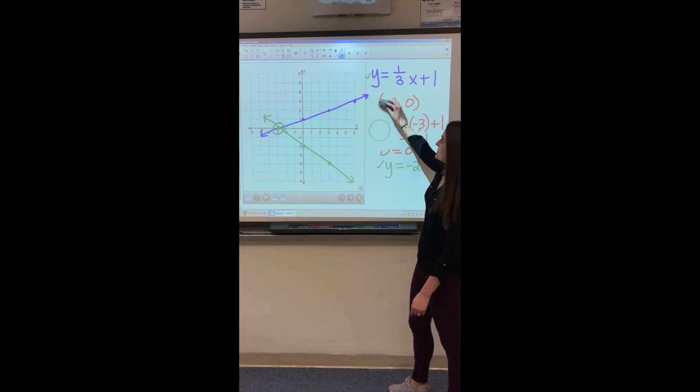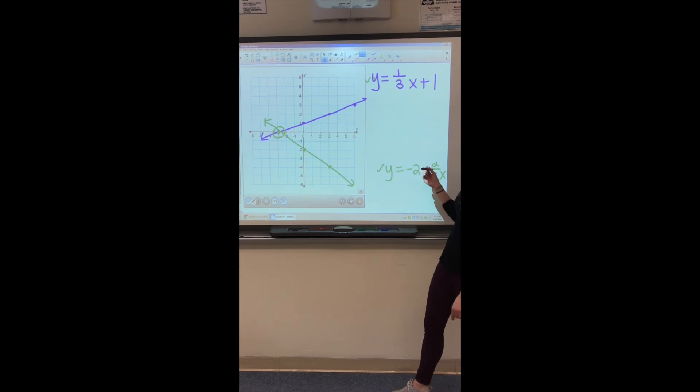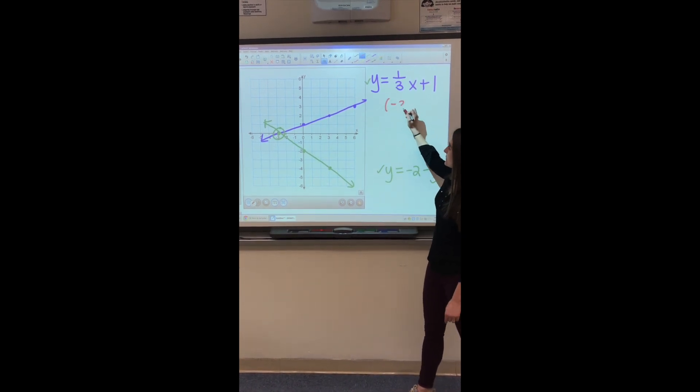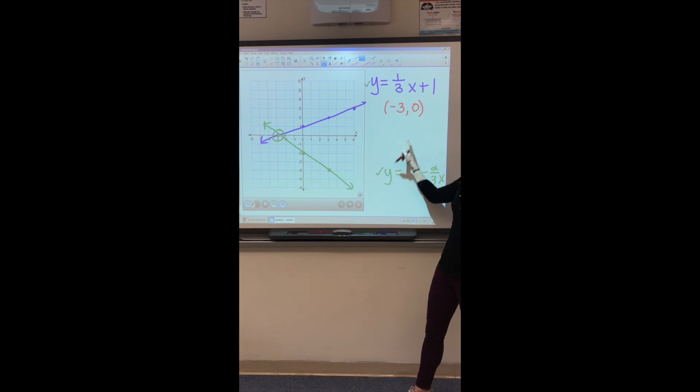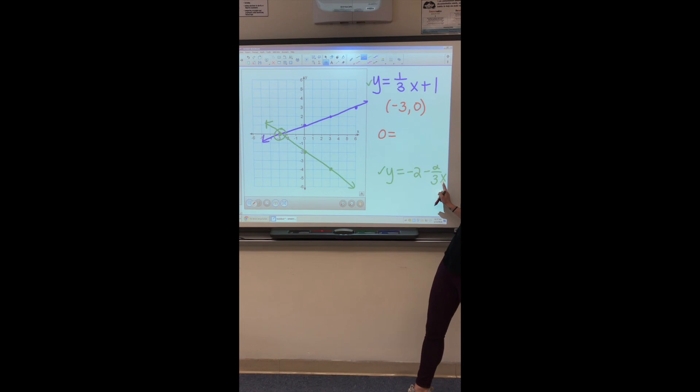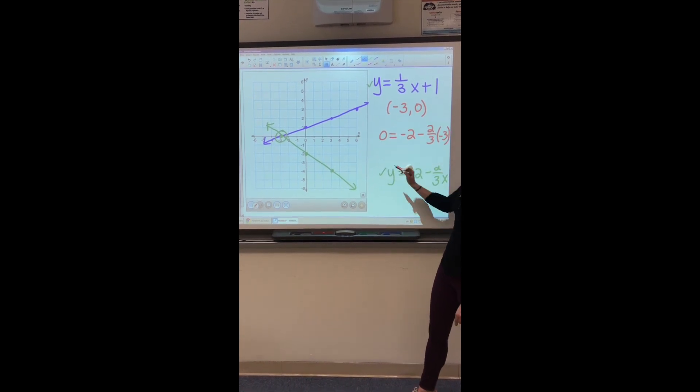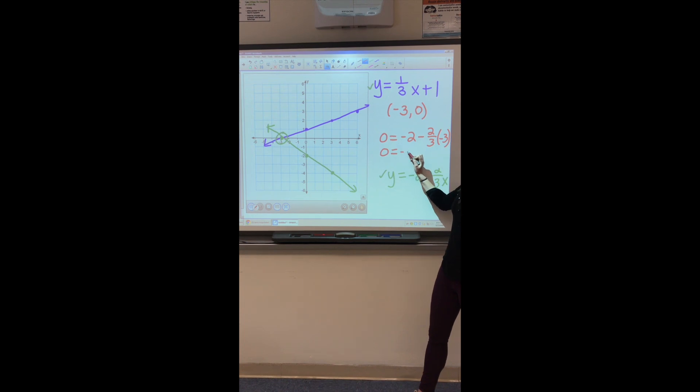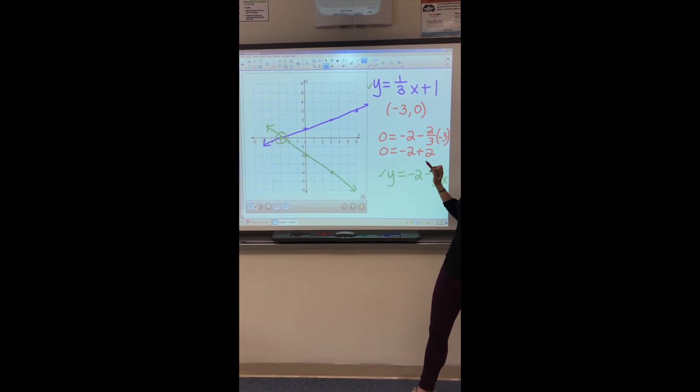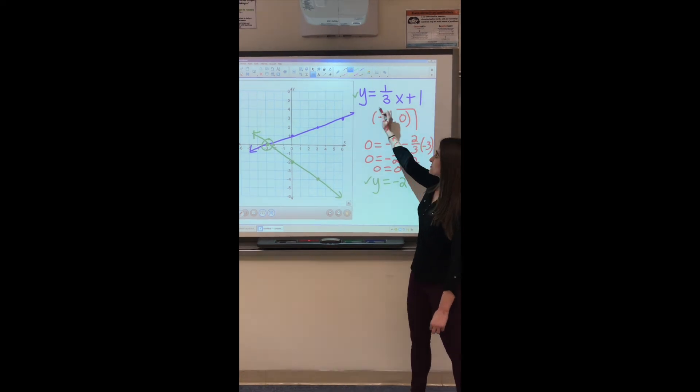But like any system, it needs to work in both. So we're going to check the same point, and we're going to check it in our bottom equation down here. So again, the point is negative 3, 0. Where our y is, we're going to plug in 0. Where our x is, we're going to plug in negative 3. So we're going to have negative 2 minus 2 thirds times negative 3, and we're going to see we have 0 equals negative 2 plus 2 when you do this multiplication out. And we're going to get 0 equals 0. So since it works in both equations, this is our solution point.